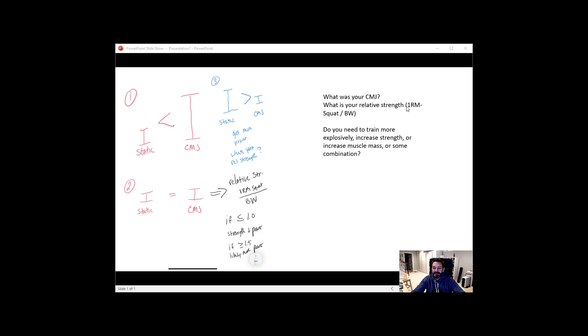And obviously full disclosure, I said 1RM squat divided by body weight. Don't go do a one rep max back squat right now just so you can figure this out. Indirect estimates of 1RM, you know, safe training, but look at your relative strength. And then start thinking, okay do I need to be more explosive, do I need to increase strength, or do I need to increase muscle mass? Or do I need some combination?